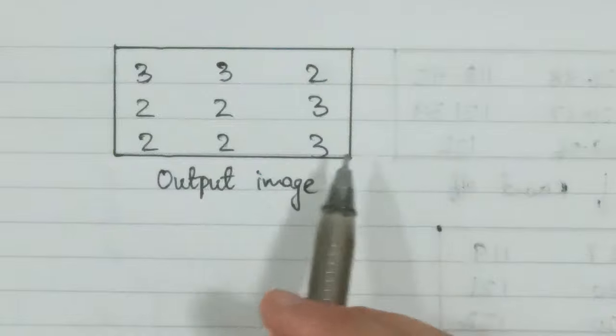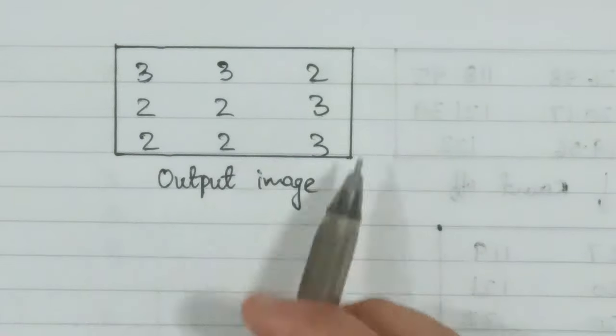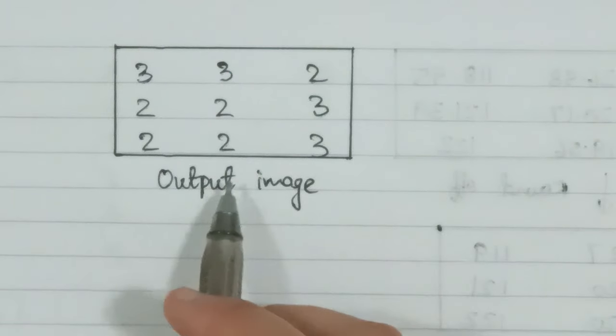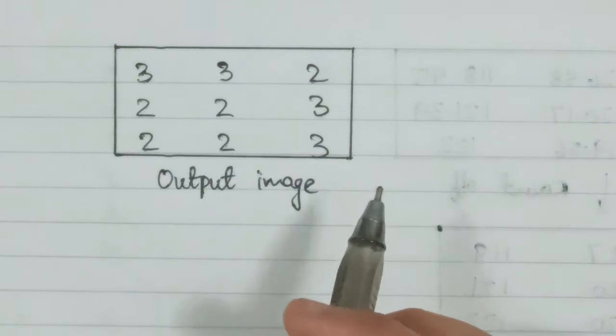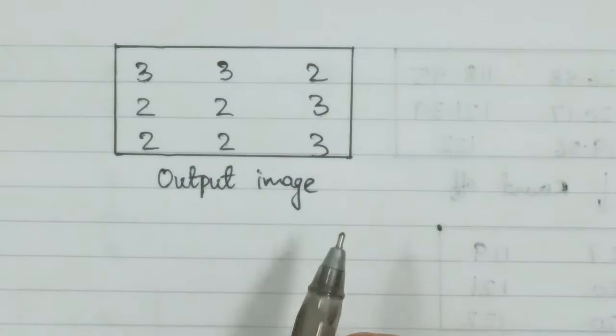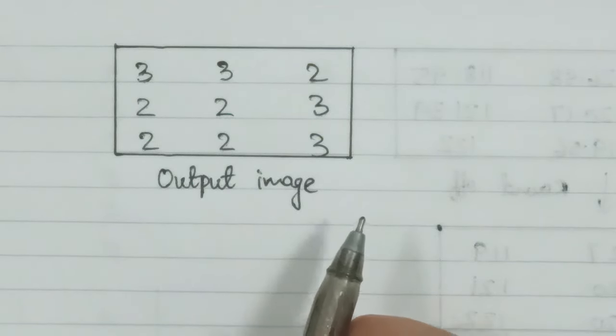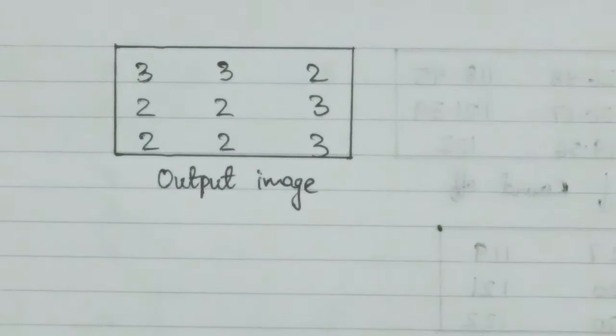Once we write down the rounded values, we get the output image: 3 3 2 2 2 2 3 2 2 3. This is the output image obtained from power law transformation. That was it for this lecture — I will see you in the next one.